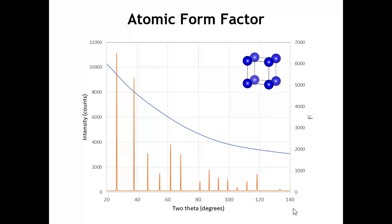If we plot the atomic form factor as a function of theta, we get something that looks like this. At zero degrees two-theta, the atomic form factor is equal to the number of electrons in the element — polonium is element 84, so F squared is just 84 squared. But as we go to higher angles, because there are interference effects from electrons scattering X-rays at different points in the volume of a polonium atom, the form factor drops off. Over the angular range in this pattern, the form factor squared drops off by about a factor of three, largely responsible for the decreasing peak intensities at higher two-theta angles.